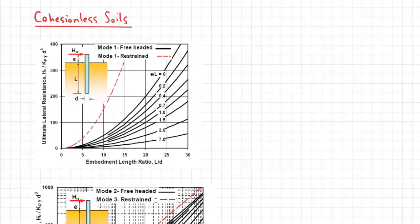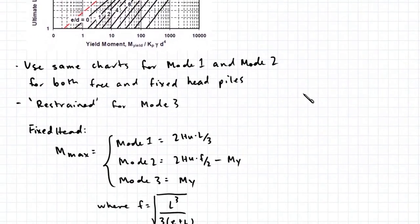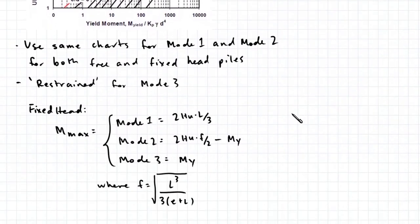Determining the lateral capacity in cohesionless soils is a very similar procedure, except the charts now look a little bit different. And for fixed head piles in cohesionless soils, we have a different set of equations for the maximum moment.